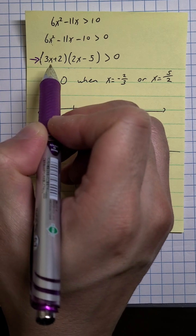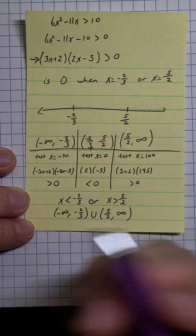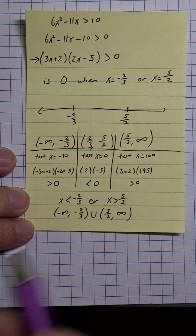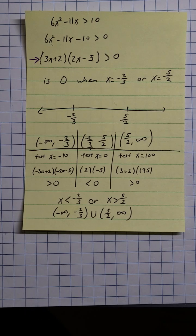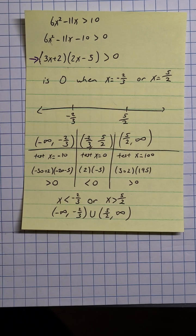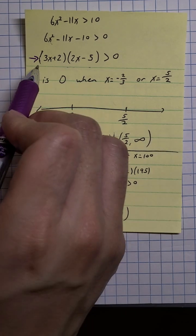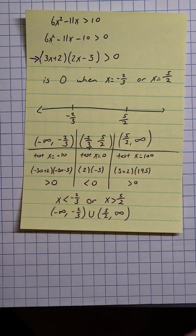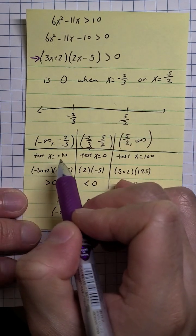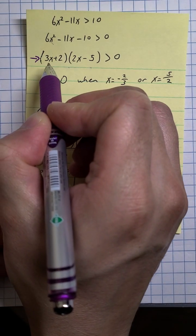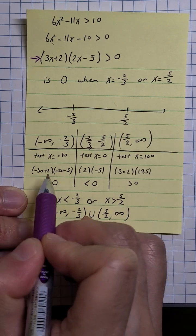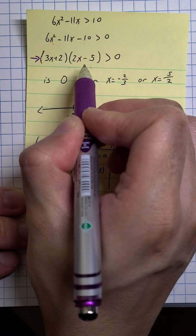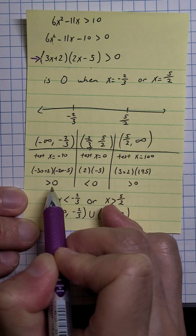I like to go extreme — pick a huge negative or huge positive number to quickly see the sign. That's the technique I teach calculus students doing the first and second derivative tests; they waste too much time plugging into the expanded form. So if I chose my test point as x = −10 and plug into the factored form, I get (−30 + 2) times (−20 − 5) — clearly negative times negative, which is positive. Two negatives make a positive, so the expression is greater than zero in that first interval.